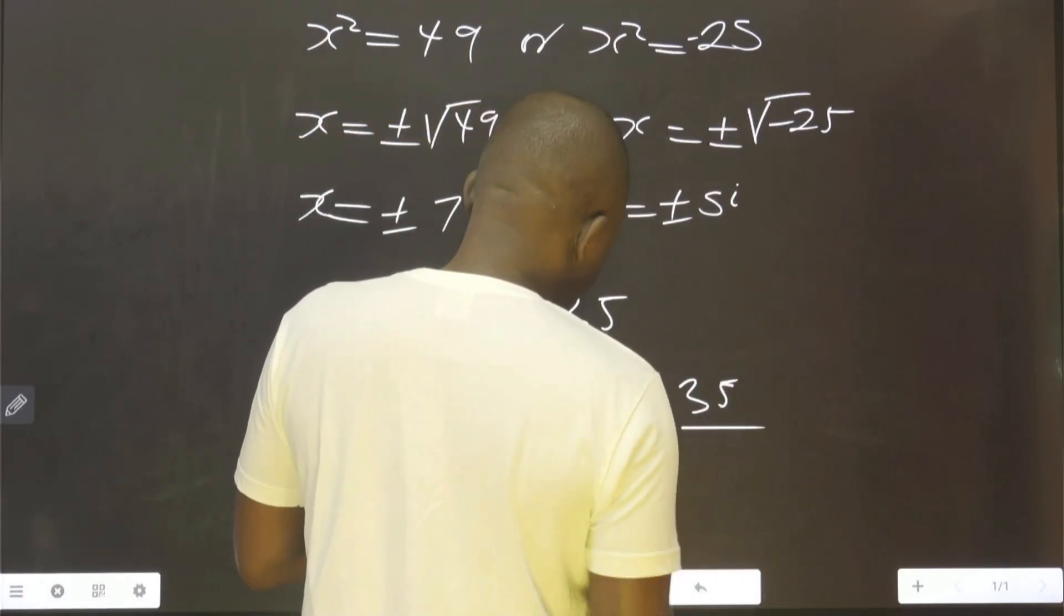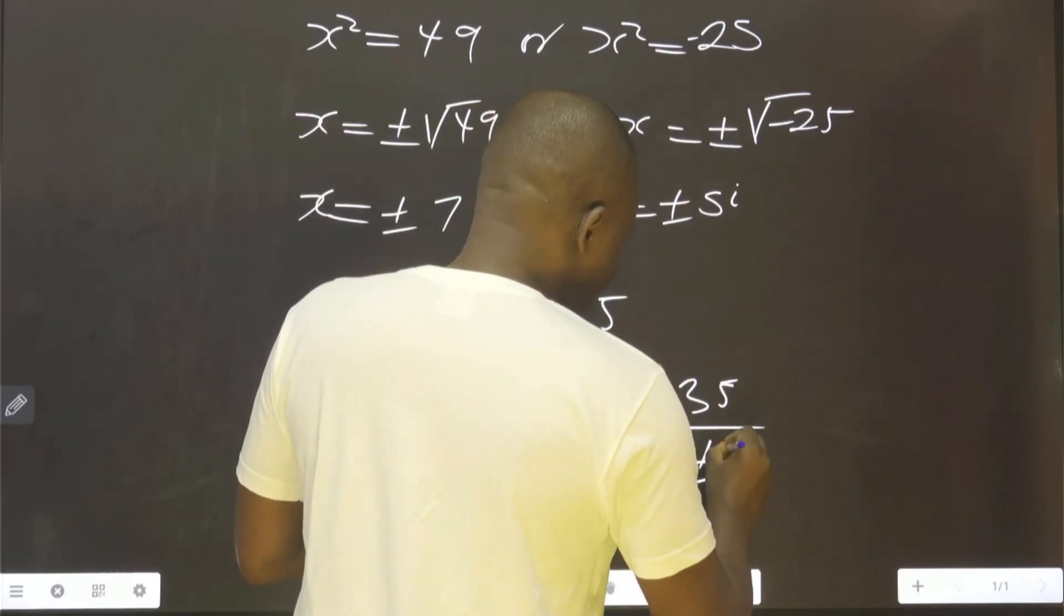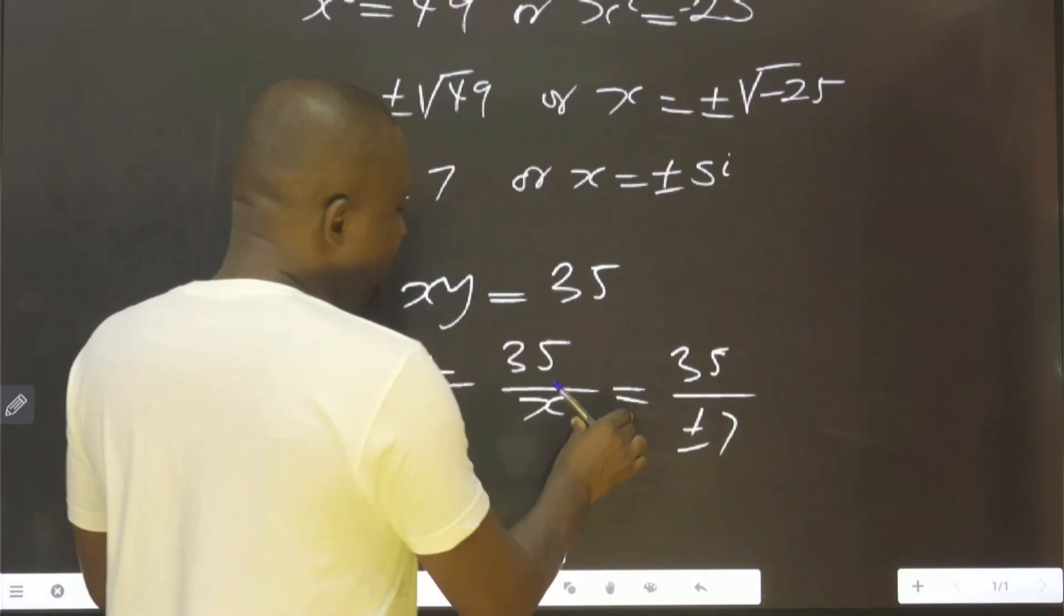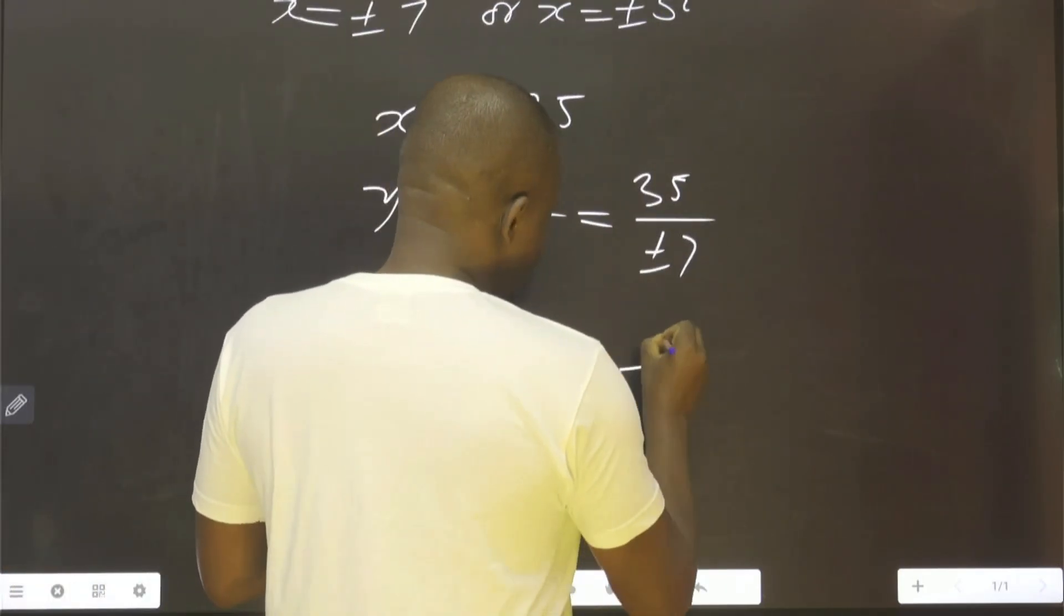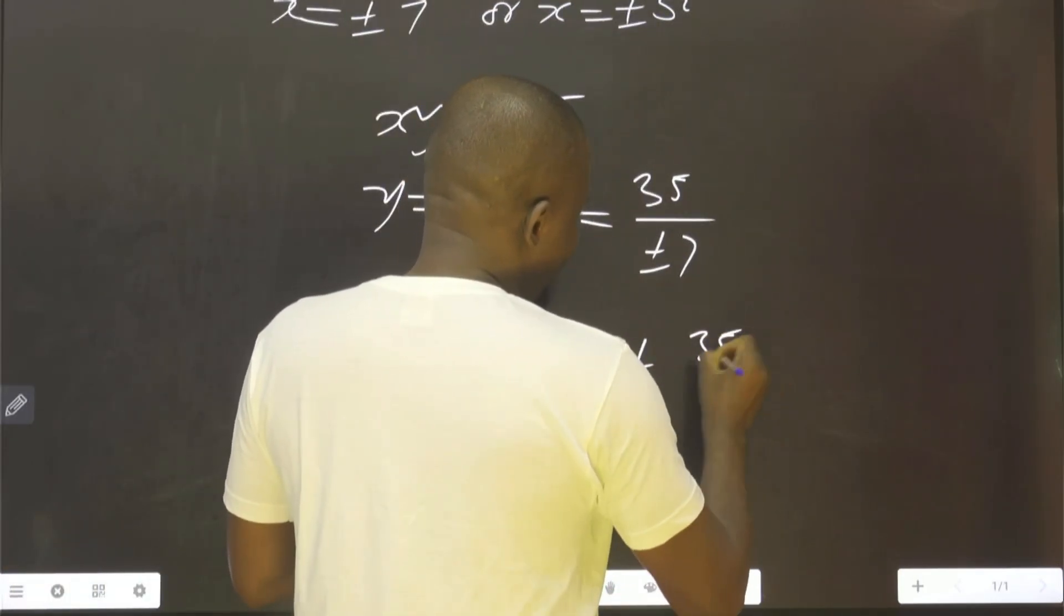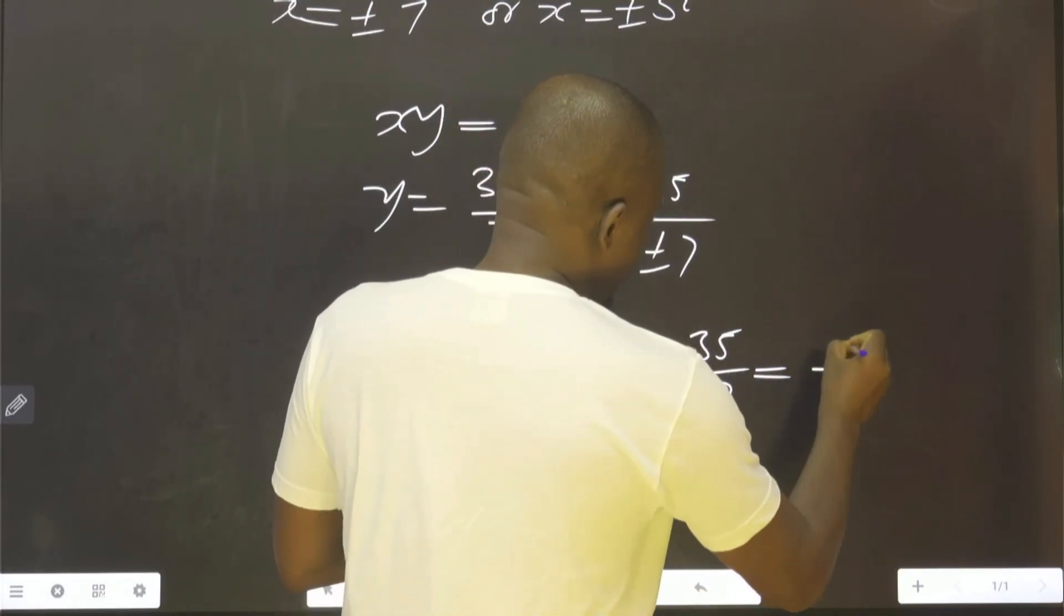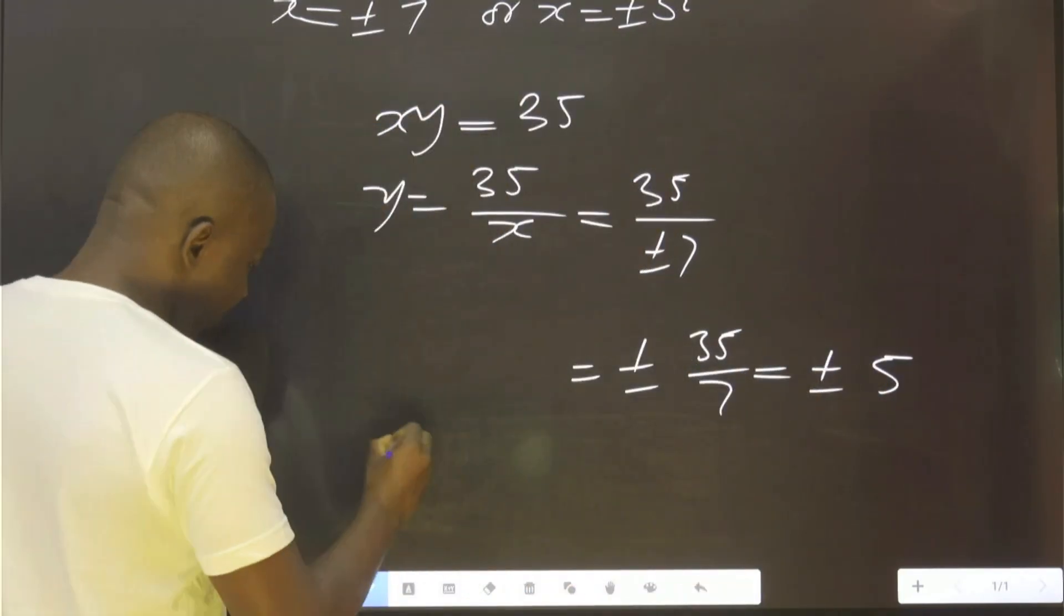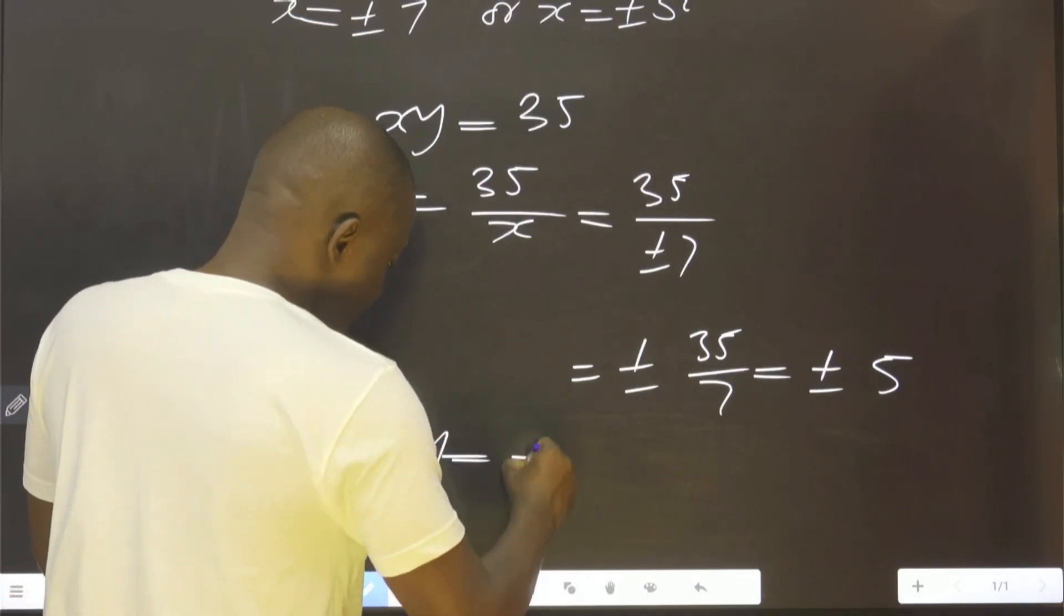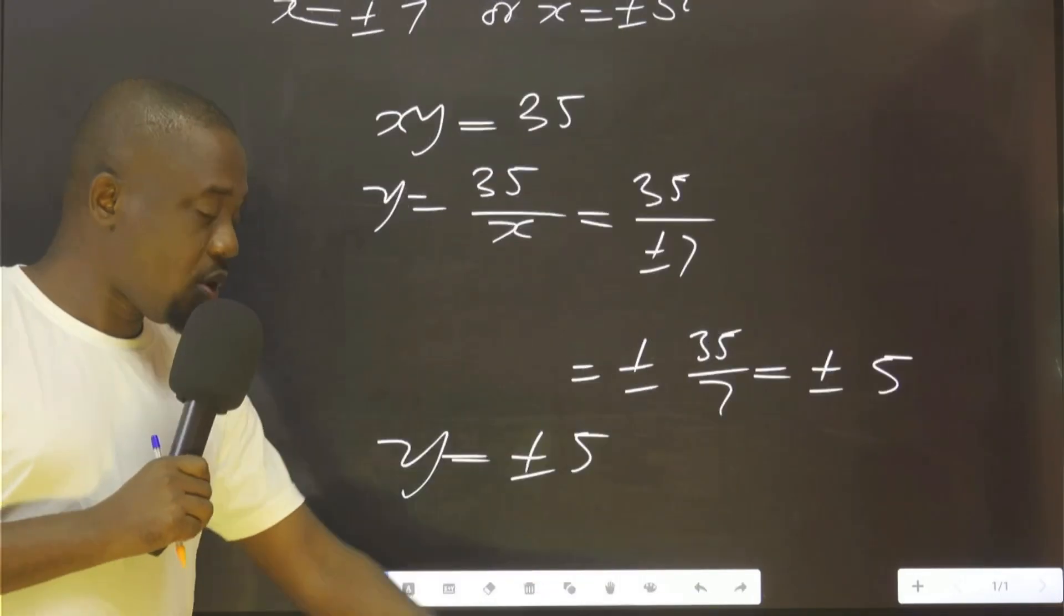35 over ±7, which will give you two results. That is ±35/7 equals to ±5. So y is equals to ±5.